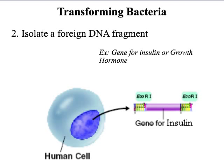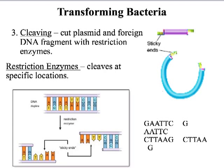The first step is you just remove the plasmid. The second step is that you're going to isolate the foreign DNA fragment — that means you're going to pick out the DNA fragment that you want from some other organism and cut it out. In our insulin example, you're taking a human cell and finding the gene for insulin in it. Once you've found it, you're going to cut it. We call that cleaving — cleaving is when you cut DNA, cutting the plasmid and the foreign DNA fragments.